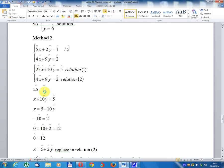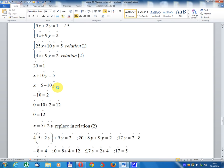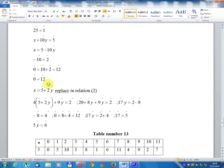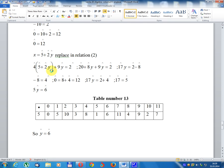Since 25 = 1 in mod 12, we have x + 10y = 5, so x = 5 - 10y. Since -10 = 2 and 0 = 12, x = 5 + 2y. Replacing in relation 2: 4(5 + 2y) + 9y = 2. 20 + 8y + 9y = 2. 17y = 2 - 8. Since -8 = 4, we get 17y = 6.